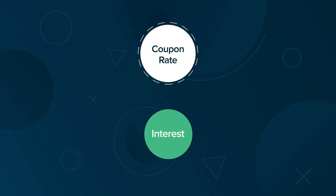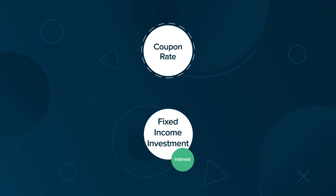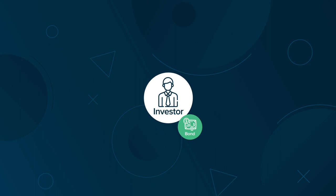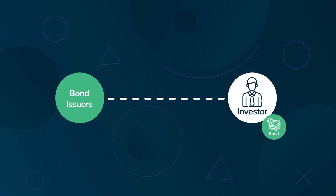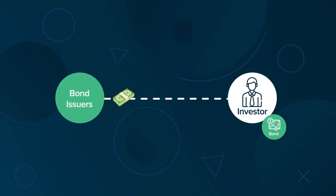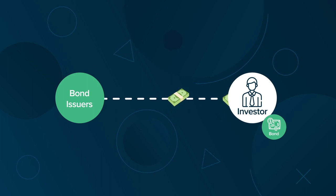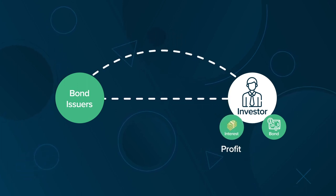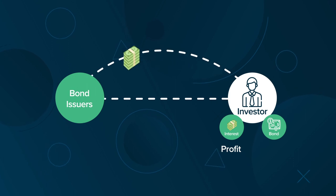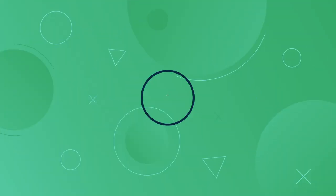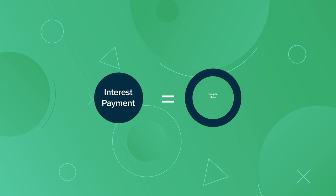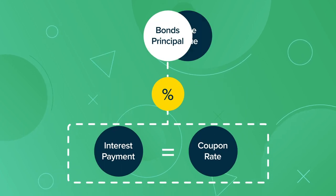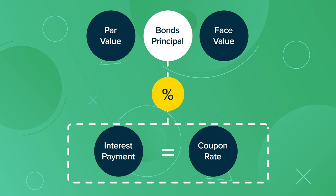A coupon rate is the interest attached to a fixed income investment, such as a bond. When bonds are bought by investors, bond issuers are contractually obligated to make periodic interest payments to their bondholders. The interest payment is equivalent to the bond's coupon rate, which is a percentage of the bond's principal, also known as its face value or par value.